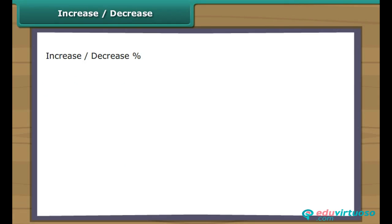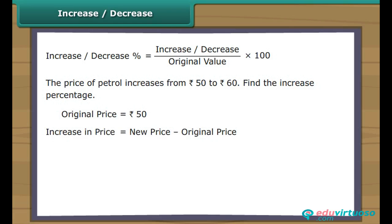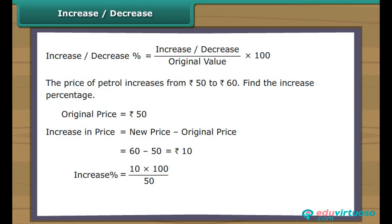Increase/Decrease percent = (Increase or Decrease / Original Value) × 100. The price of petrol increases from Rs. 50 to Rs. 60. Original price = Rs. 50. Increase in price = 60 − 50 = Rs. 10. Increase percent = 10 × 100 / 50 = 20%. So, the fuel prices have increased by 20%.